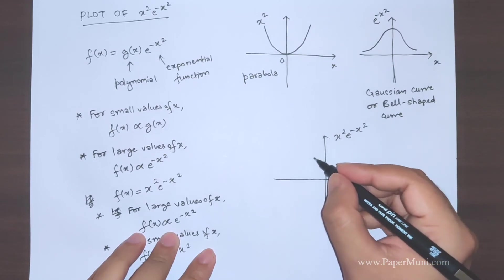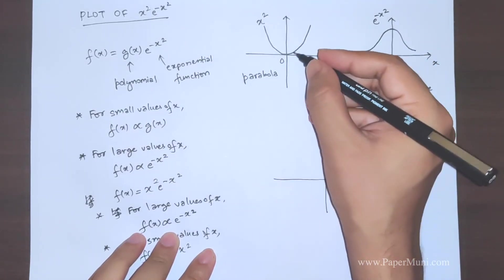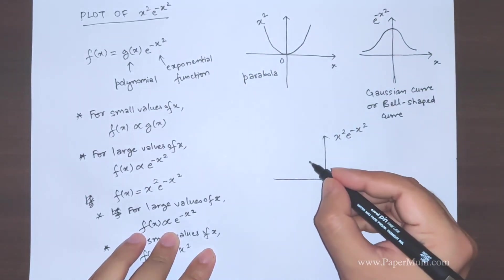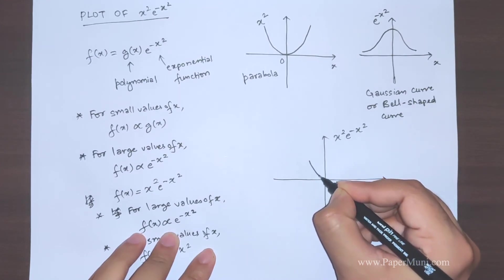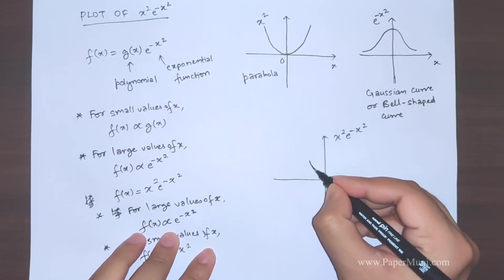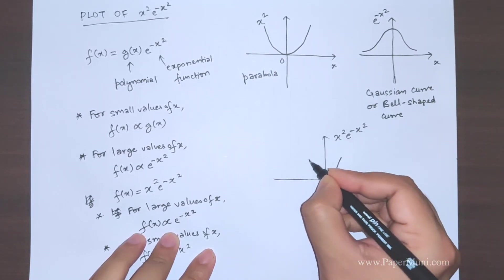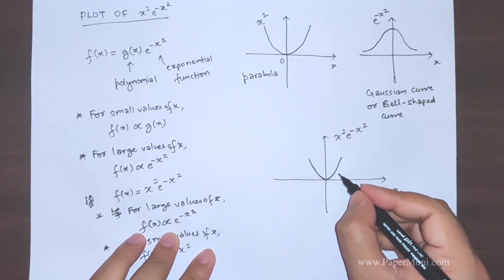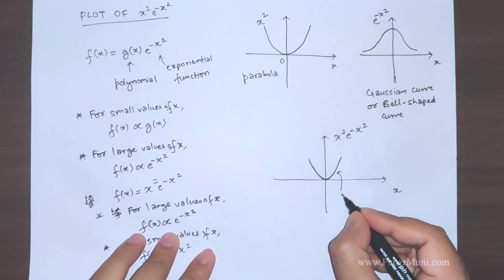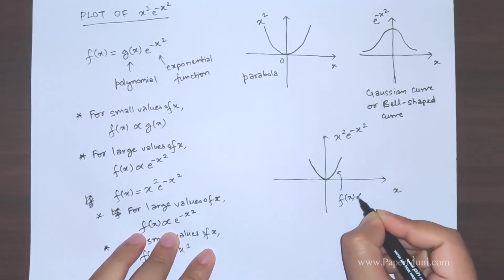For small values of x this f(x) depends on, this function depends on x square. So for small values means near zero. So we'll have the parabola. So this region, in this case f(x) is proportional to x square.